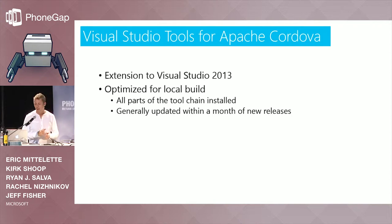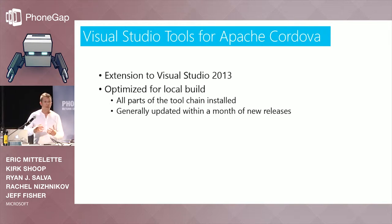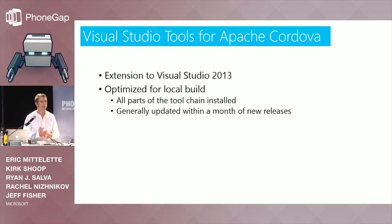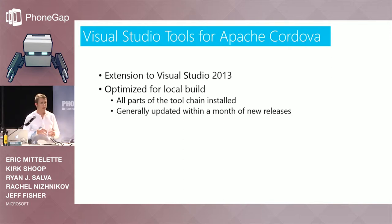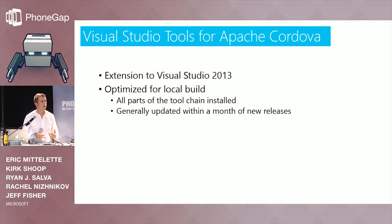Unlike PhoneGap and PhoneGap Build, it's optimized for local builds — less about sending your package out to a server to be compiled. It does require all the native build systems to be installed locally, which is why I'm here on a Mac running Parallels today. We'll mostly be dealing with Android and iOS. Because it requires all parts of the toolchain — Node, Git, Android SDK and so on — that's hard. There are a lot of different versions and configurations, so it's really important to make that easy for developers to get started.